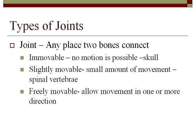The first type of joint is an immovable joint — a joint where there is no motion possible at all. A common example of an immovable joint would be your skull. When you touch the top of your head, it doesn't wiggle, even though there are bones that have joined together there.